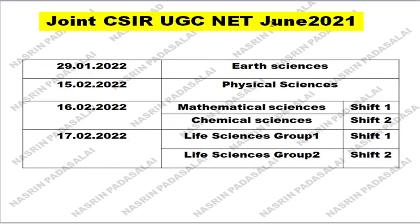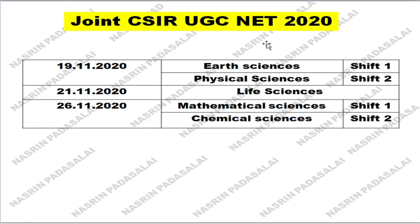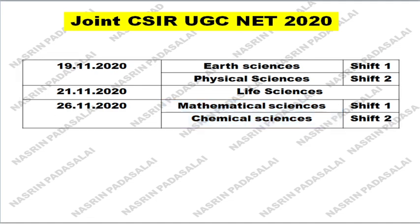This schedule is based on analyzing past year patterns. For example, in the June 2021 exam, which was conducted this year in January and February, Earth Sciences was written first, and Physical Sciences wrote the examination on 15th of February. Mathematical Sciences and Chemical Sciences were conducted on the same single day.